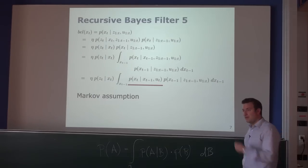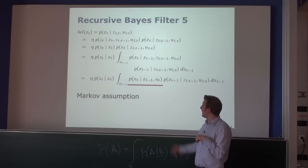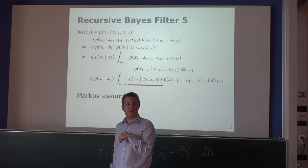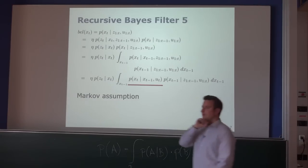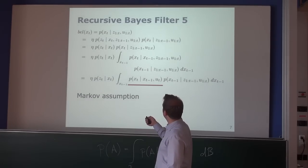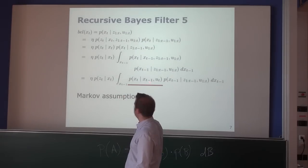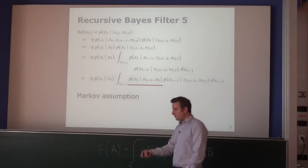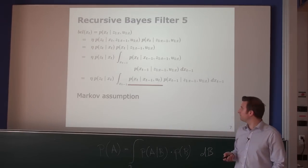This term tells us: given I know where the robot is at time T minus one and it executes motion command U_T — for example, go one meter forward — I can have a probability estimate about the position of the robot at the current time, somewhere around the predicted pose. A student asks why all U's disappeared from line 2 to line 3. The answer: in the first simplification the known state was x_T, but here it is x_{T-1}, so we can only get rid of information up to the state we know. The command executed in the future, U_T, is still needed.